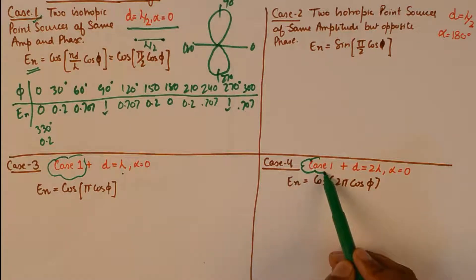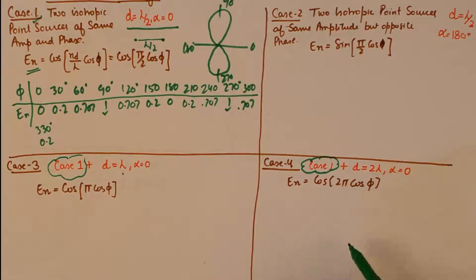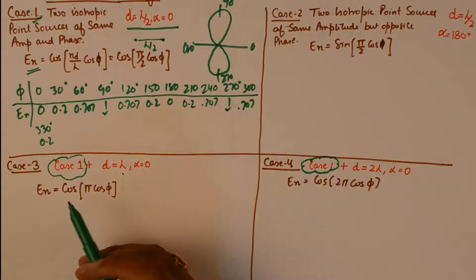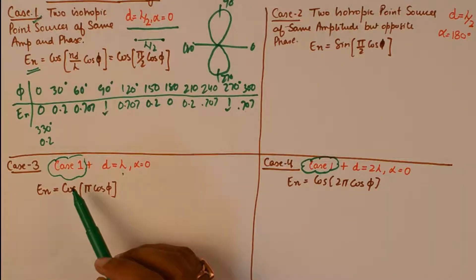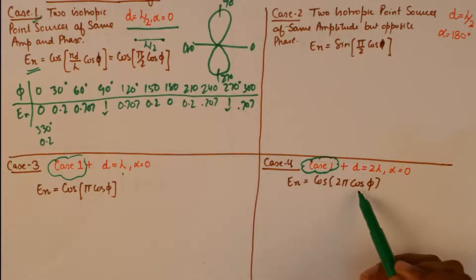It is equivalent to case 1, plus the distance has changed from lambda by 2 to 2 lambda, which will change the array factor also, which will change the normalized value of En at a distant point also. This is known as normalized field, the normalized field that we get at a distant point.